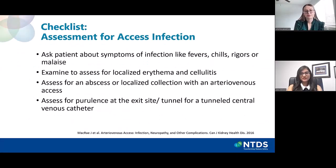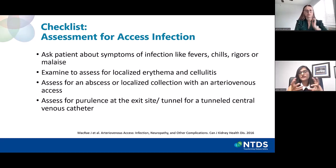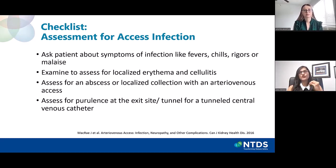It's history and physical exam — that's the big thing. You need to ask patients about symptoms of infection: have they been having fevers, chills, diaphoresis? Then you examine the access to see if there's any local erythema or cellulitis around it. If they have an AV fistula, see if there's a localized collection forming. If they have a tunnel catheter, look at the exit site to see if there's any redness or purulence around it. You have to remember to do it with every patient, as their access is their lifeline. We need to make sure there is no sign of infection.